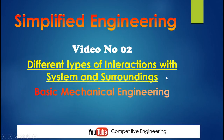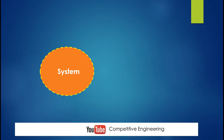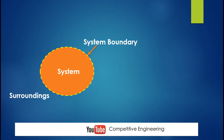Welcome to Simplified Engineering. This is video lecture number two: different types of interaction between system and surroundings. In the last video lecture we explained the concept of system, surroundings, and system boundary. Now we are going to explain different types of interaction between system and surroundings.